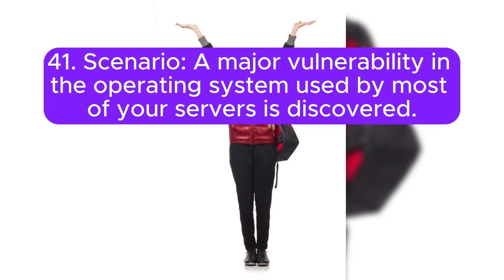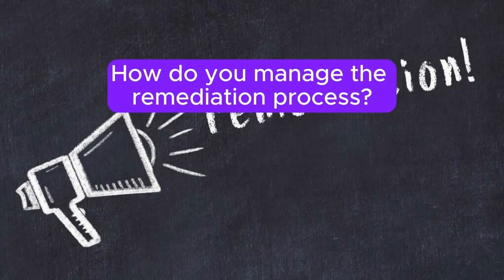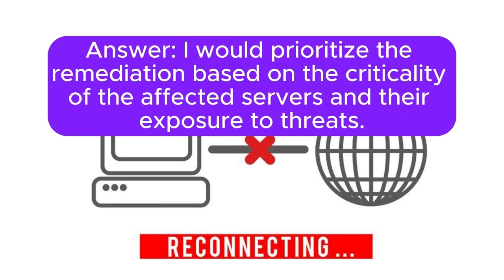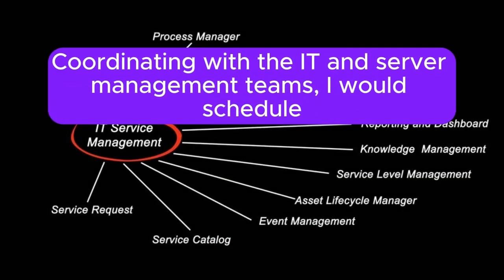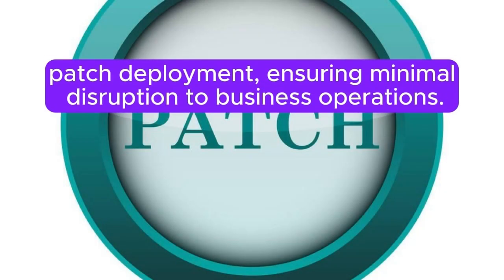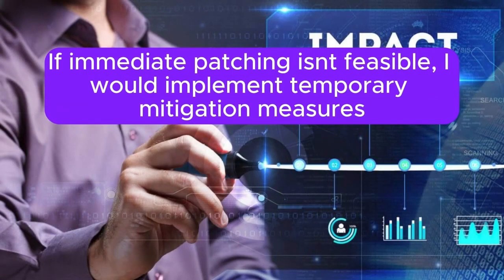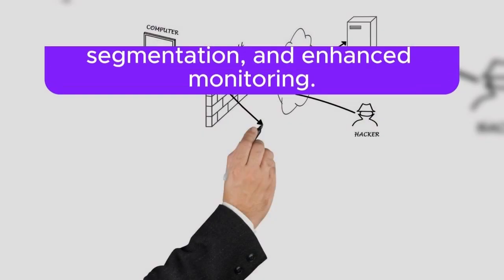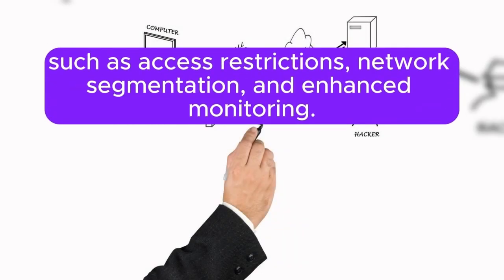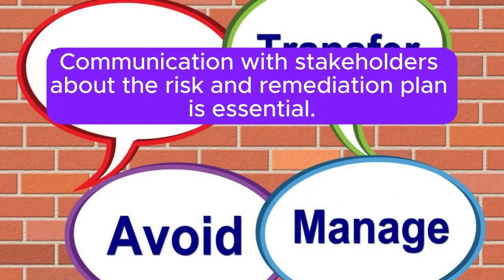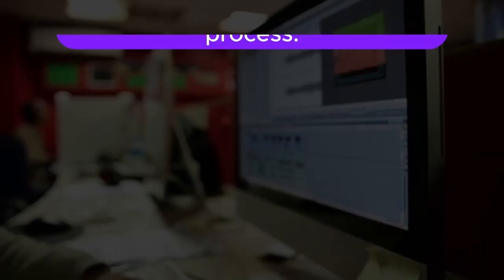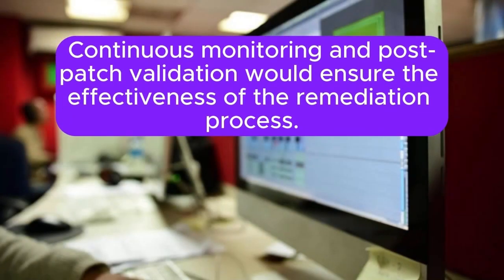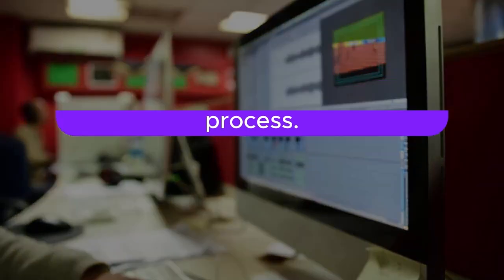Scenario 41: A major vulnerability in the operating system used by most of your servers is discovered. How do you manage the remediation process? I would prioritize the remediation based on the criticality of the affected servers and their exposure to threats. Coordinating with the IT and server management teams, I would schedule patch deployment, ensuring minimal disruption to business operations. If immediate patching isn't feasible, I would implement temporary mitigation measures such as access restrictions, network segmentation, and enhanced monitoring. Communication with stakeholders about the risk and remediation plan is essential. Continuous monitoring and post-patch validation would ensure the effectiveness of the remediation process.